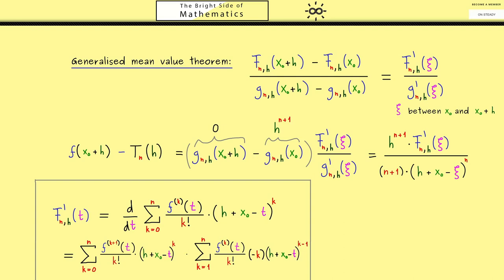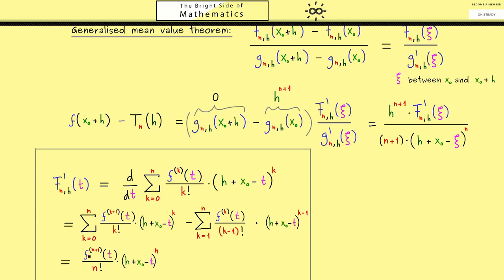Pulling out the minus and cancelling k in the k factorial leaves (k−1) factorial. The two resulting sums telescope: the k=0 term in the first sum matches the k=1 term in the second sum and they cancel, and this continues for all k up to n. Only one term remains, so F prime of t simplifies to the (n+1)th derivative of f divided by n factorial, times (h plus x0 minus t) to the power n.